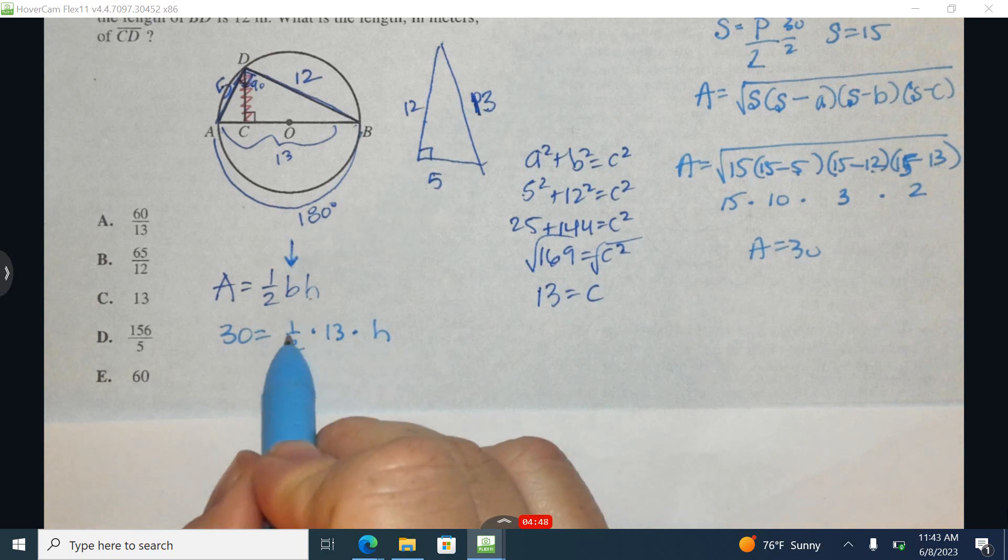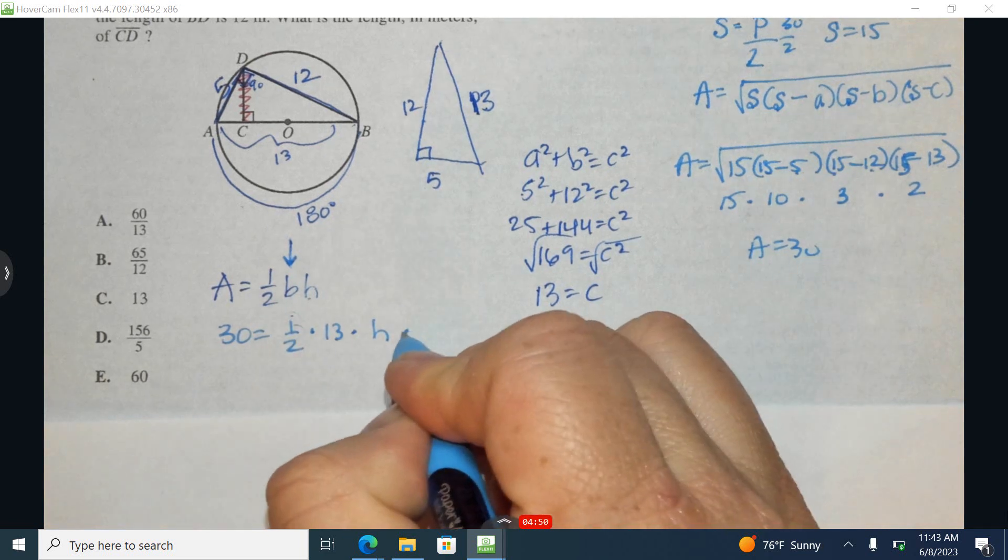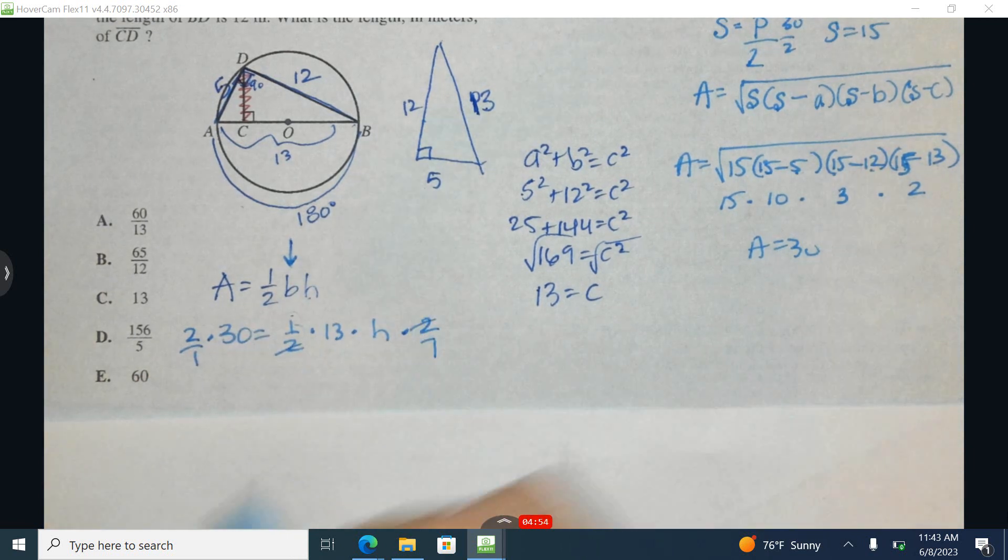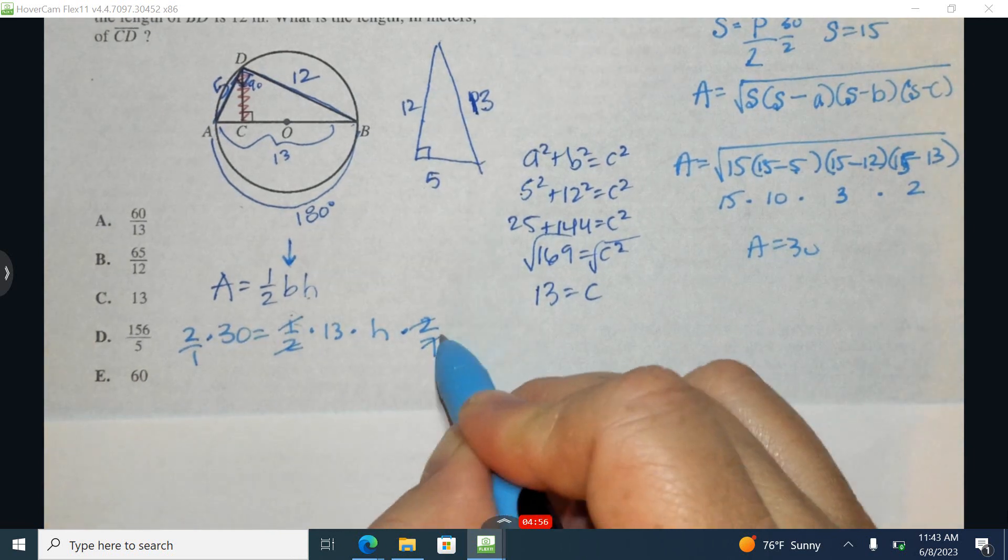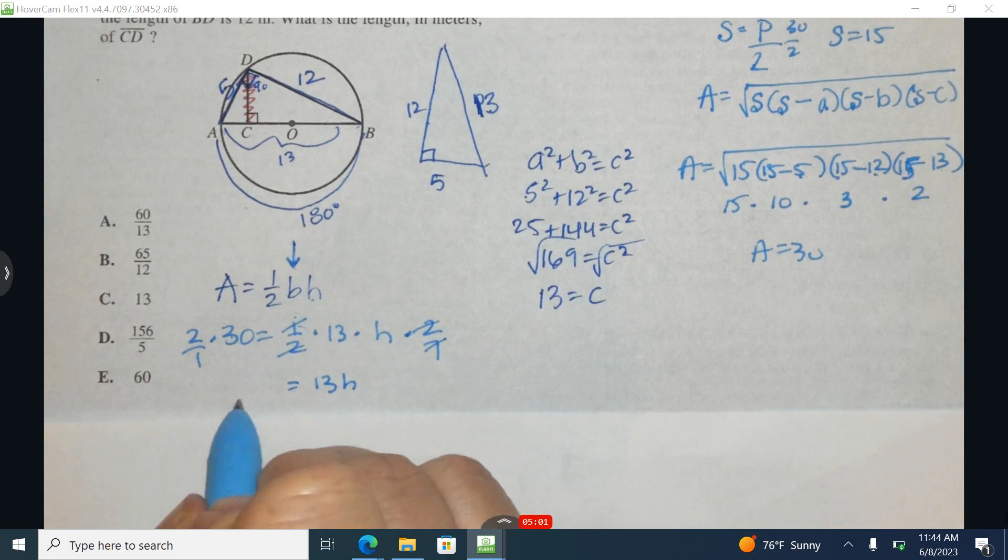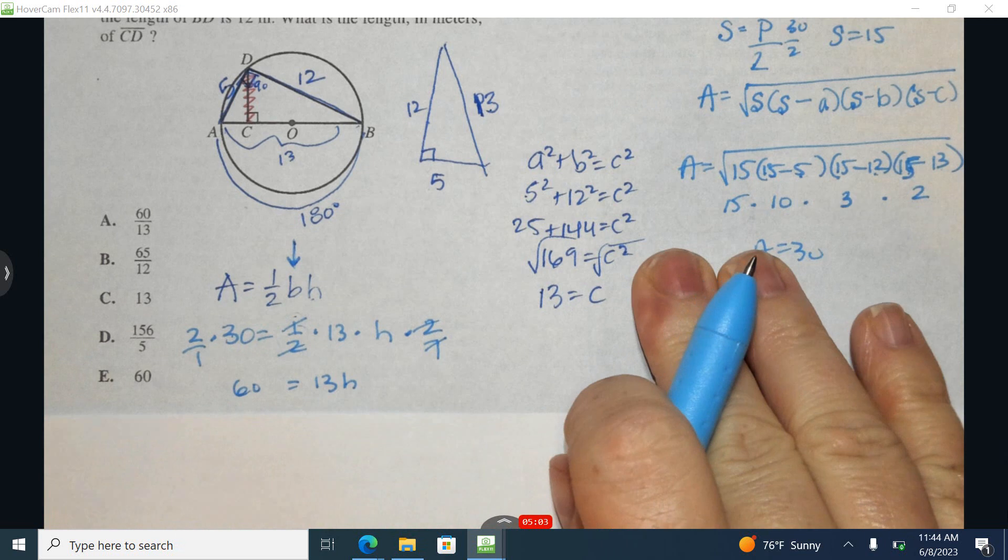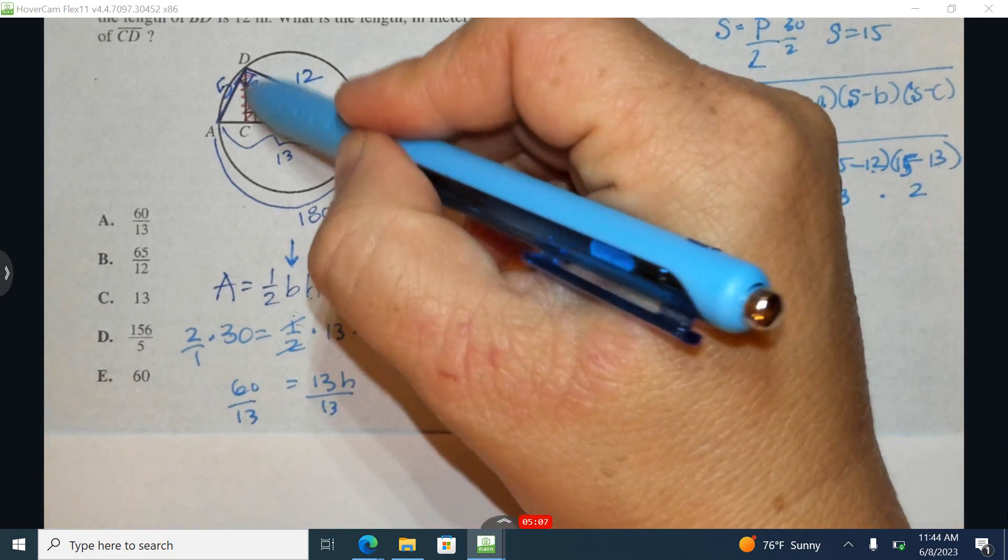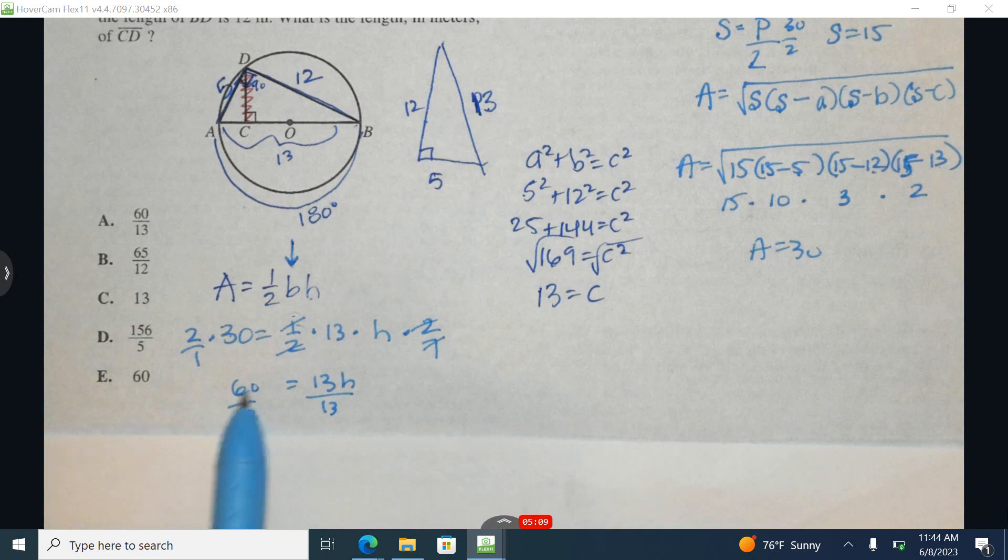I'm going to start by multiplying by the reciprocal of 2 over 1. What does that do for me? The 2's are going to simplify to 1. The 1's are going to simplify. And I have 13H equals 2 times 30 is 60. Now I'm going to divide by 13 to isolate the H. And the height, also known as DC, is 60 over 13. Option A.